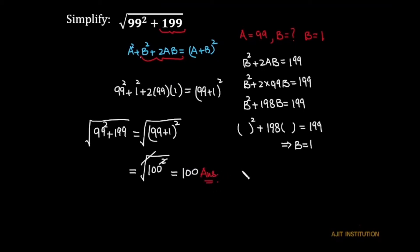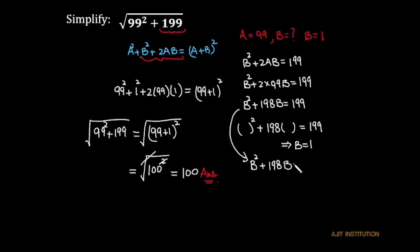Now, you can also calculate the value of b formally since this is a quadratic equation. Rearranging: b squared plus 198b minus 199 equals 0. This is a quadratic equation in b and we can solve it by factorization.